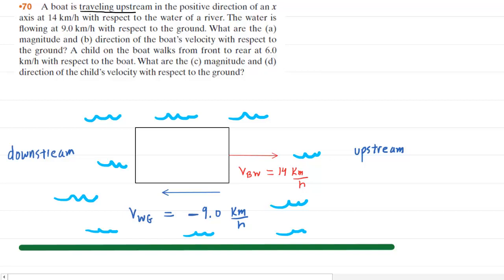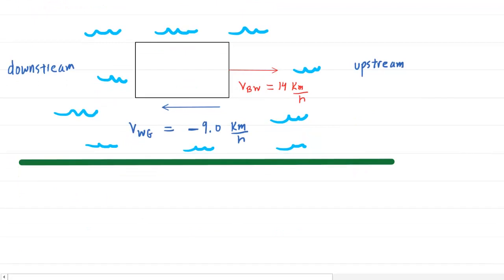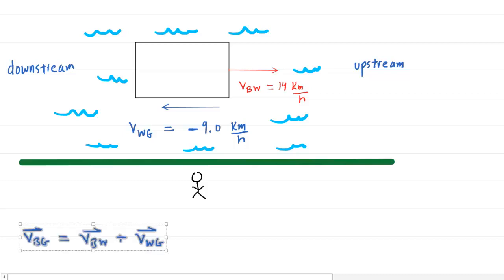In parts A and B, we need the magnitude and direction of the boat's velocity with respect to the ground. Intuitively, if you were an observer on the ground and saw the boat going 14 kilometers per hour to the right while the water moved left at 9 kilometers per hour, then overall the boat's velocity should just be 5.